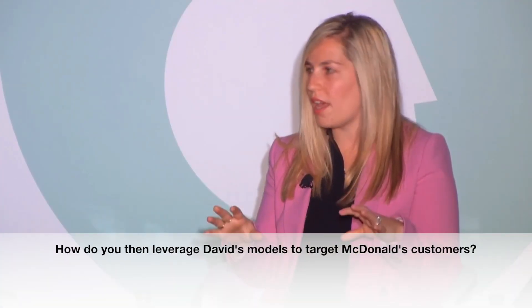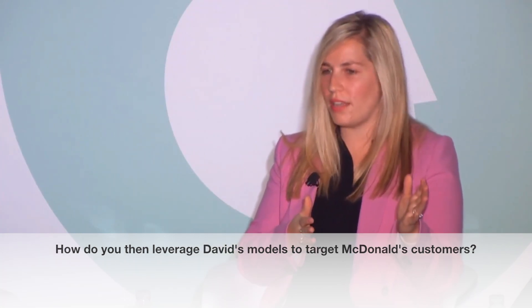We set up an experimental design so that we could say, of these models that David built, if we give messaging that's more relevant — say you're a chicken person, can we give the chicken people a chicken message rather than a burger message? We set up the test so that one group, our control group, gets an even rotation of all our messaging, and our test groups had chicken gets chicken, burger gets burger. What we did see was that the results were three to five times stronger with our test group than our control, so we have proof that that's working.